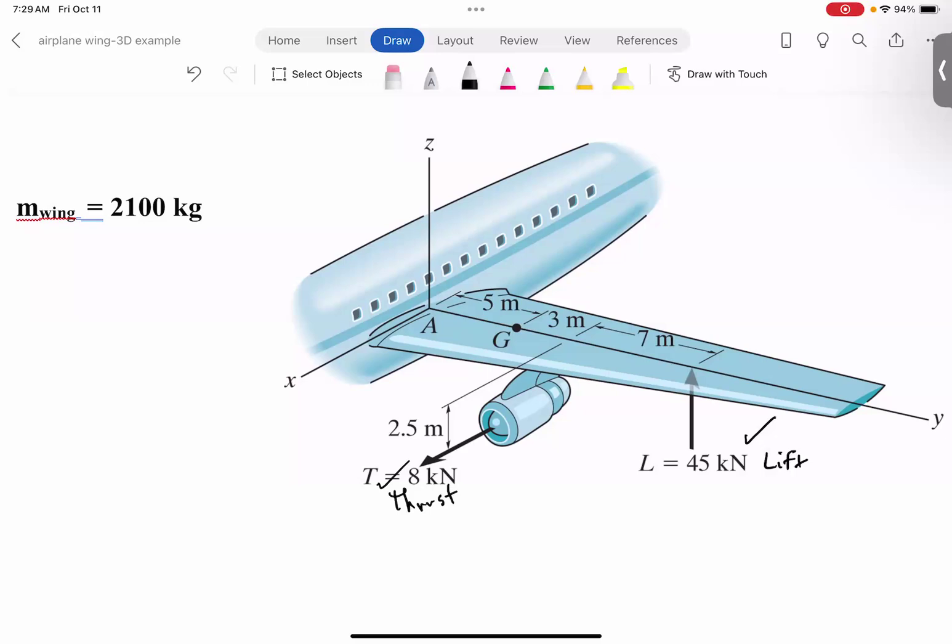And then, of course, the mass of the wing is given to be 2,100 kilograms, and we're going to convert that to the weight. So the weight is mass times gravity. I'm going to take the gravity to be about 10 to make things easier for us so we don't have to deal with fractions. So this becomes 21,000 newtons or 21 kilonewtons.